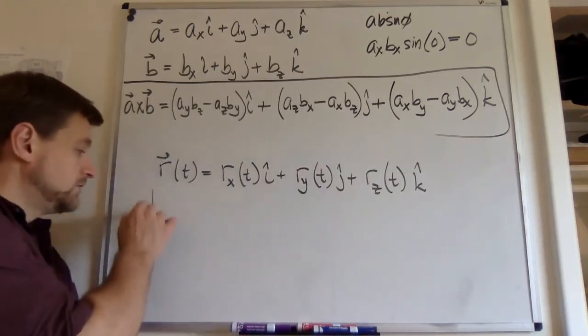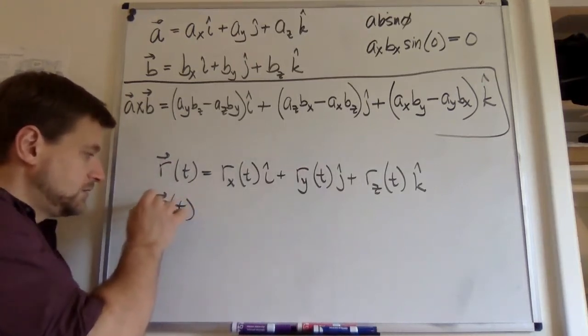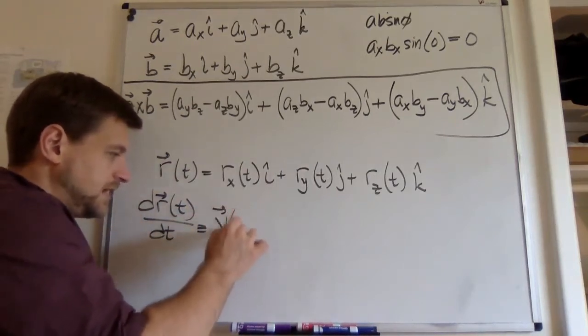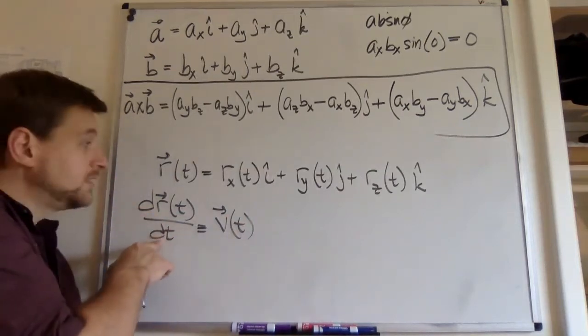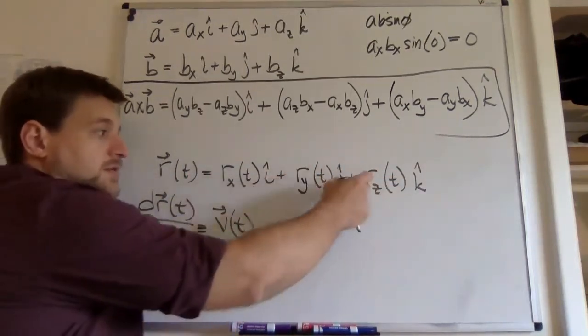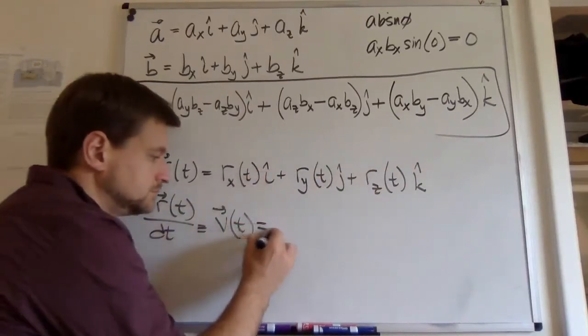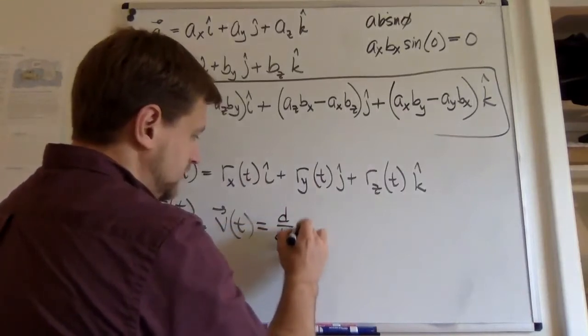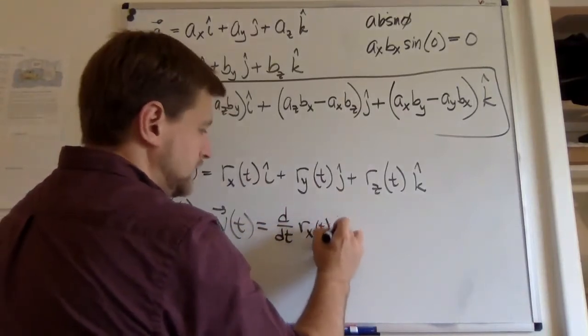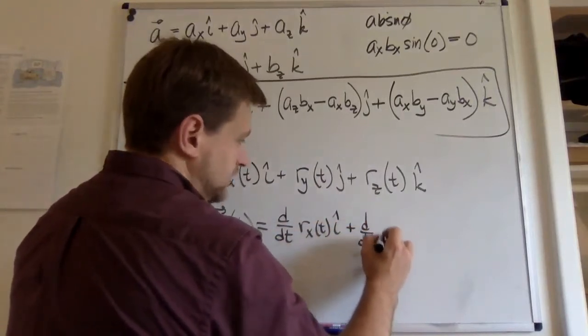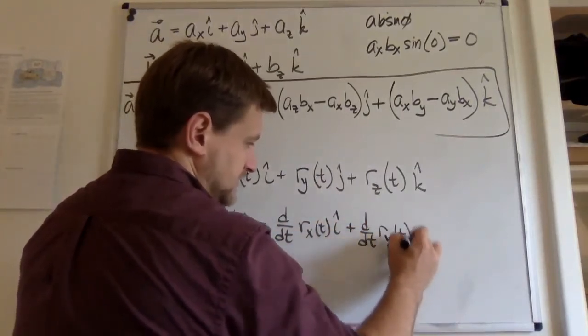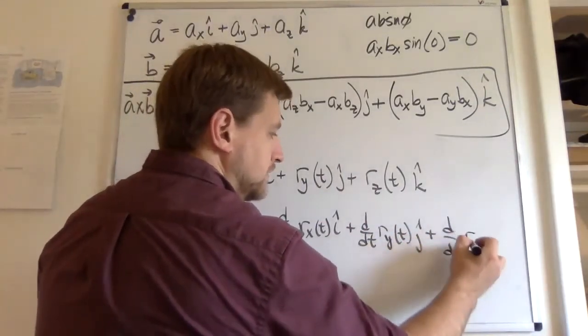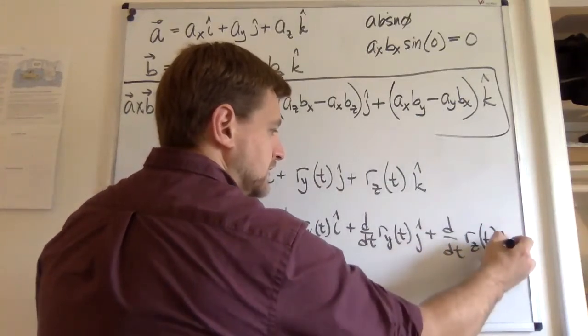The time derivative of the position vector is the velocity vector as a function of time. The derivative operator moves through the sum, we get an x component, d by dt of rx of t in the i plus d by dt of ry of t in the j plus d by dt of rz of t in the k.